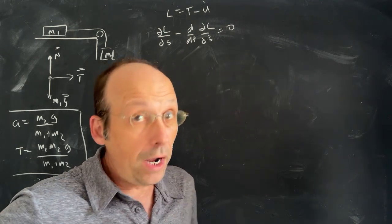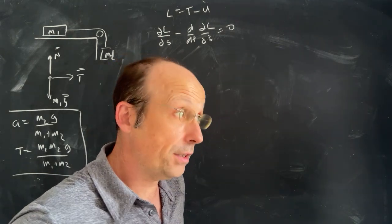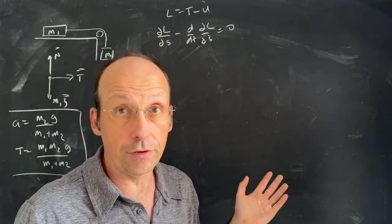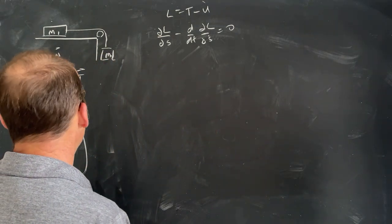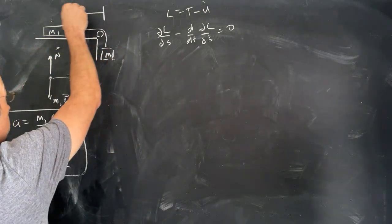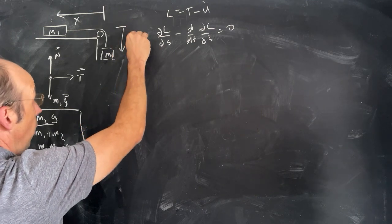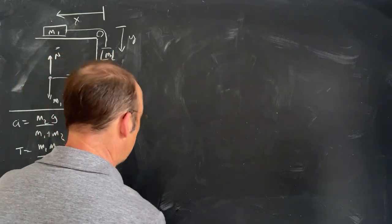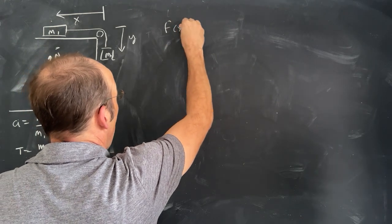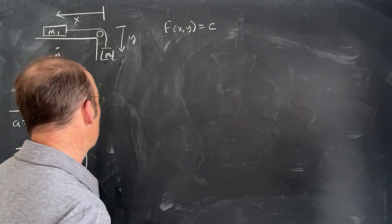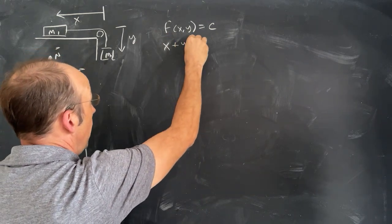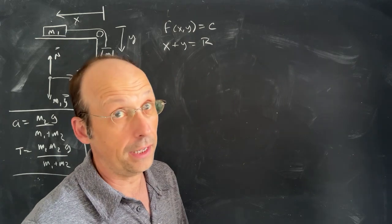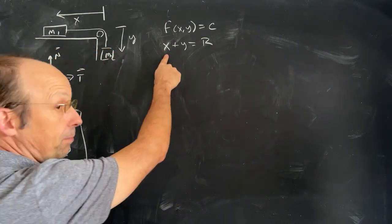But if I want to find the force of constraint — the force that makes the system move the way it does — I need to under-constrain the problem, meaning I introduce too many degrees of freedom. So I'm going to call the position of M1 'x' and the position of M2 'y', and then come up with an equation of constraint: f(x, y) = x + y = R, where R is the length of the string. I'm calling it R, not L.